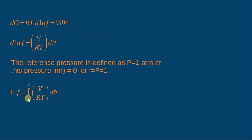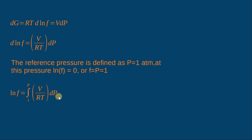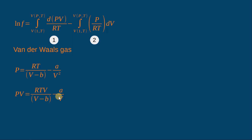Now if we want to solve the RHS for a cubic equation of state, V can never be expressed explicitly in terms of pressure and temperature. Therefore we modify the RHS as d(PV)/RT - P/RT · dV. What has been done is that V dP has been replaced by d(PV) - P dV, giving two terms on the RHS which need to be integrated.